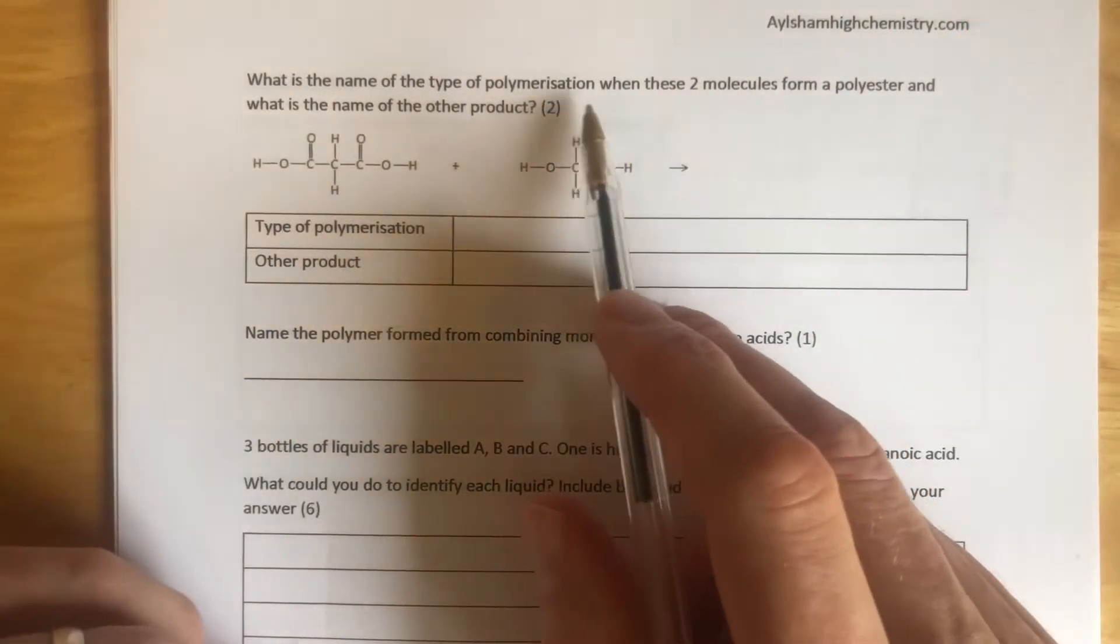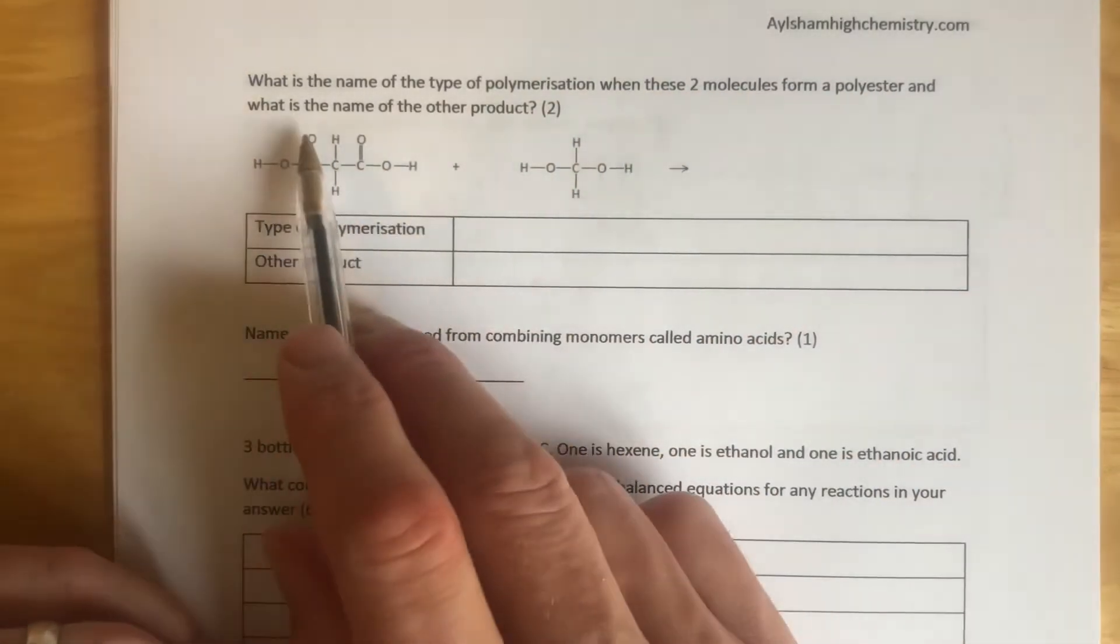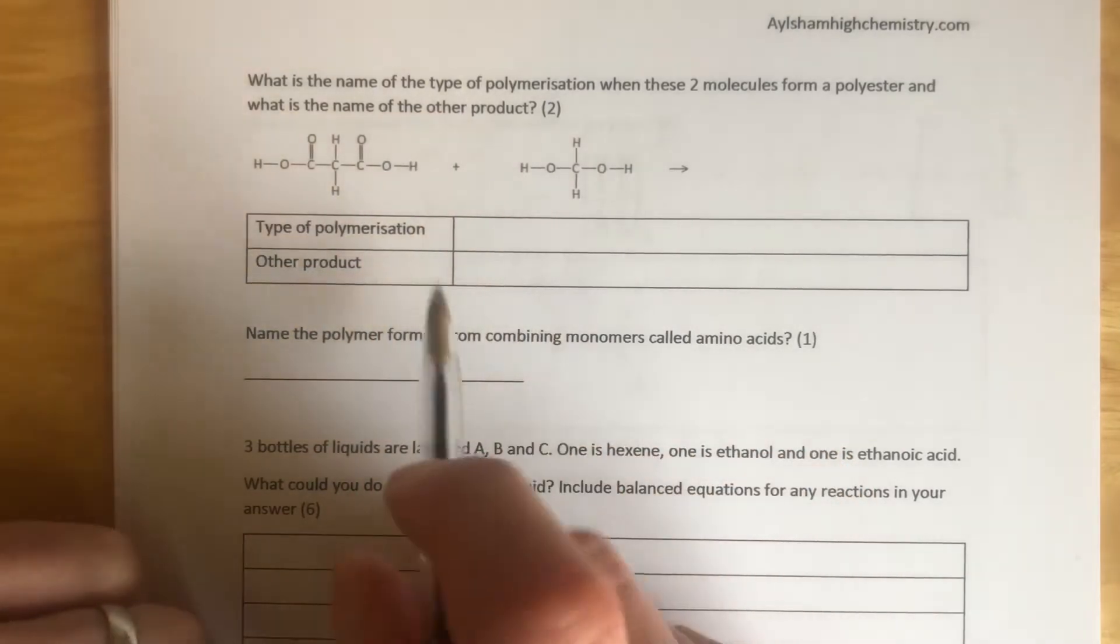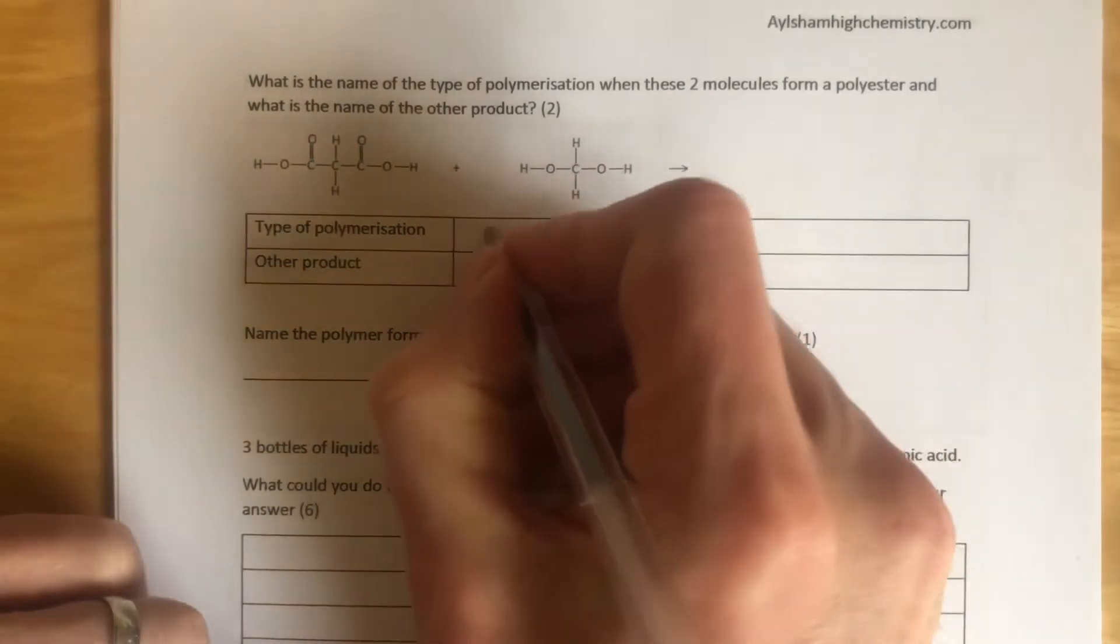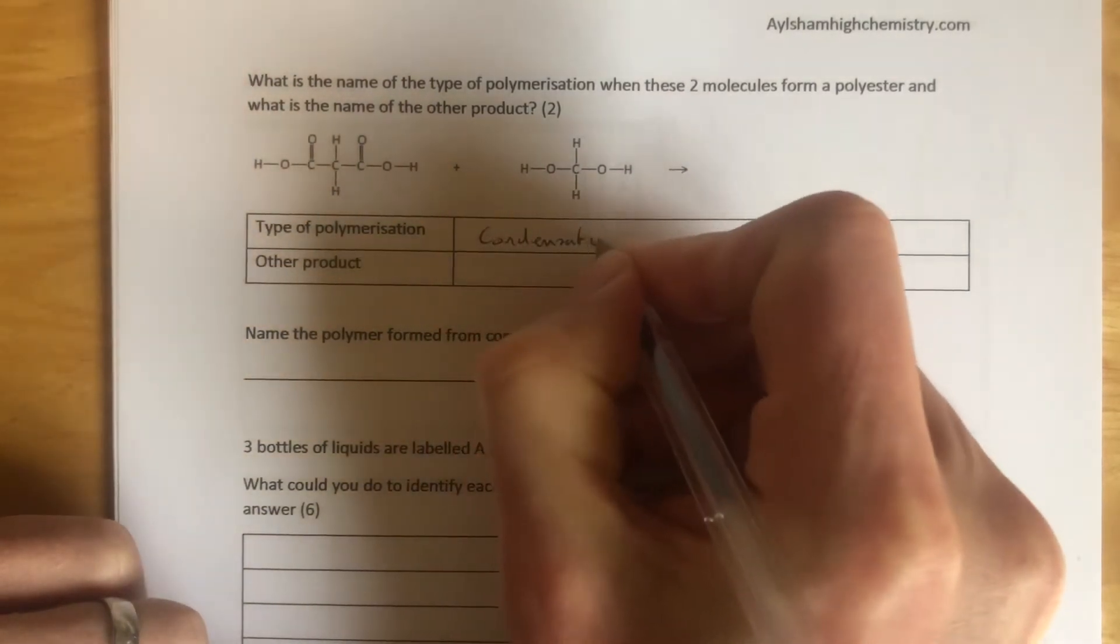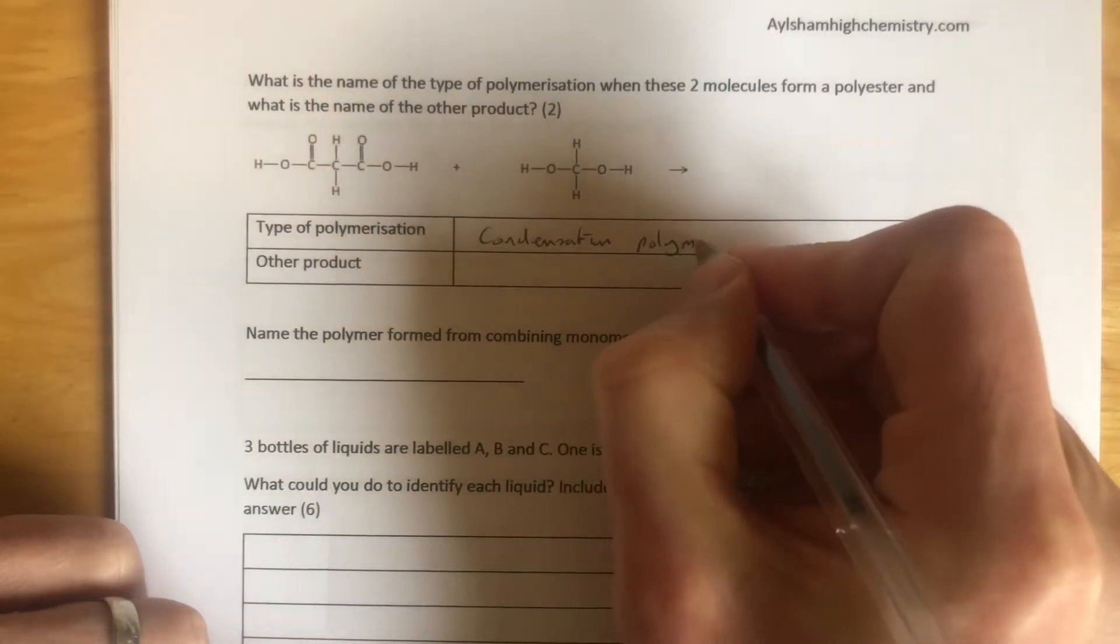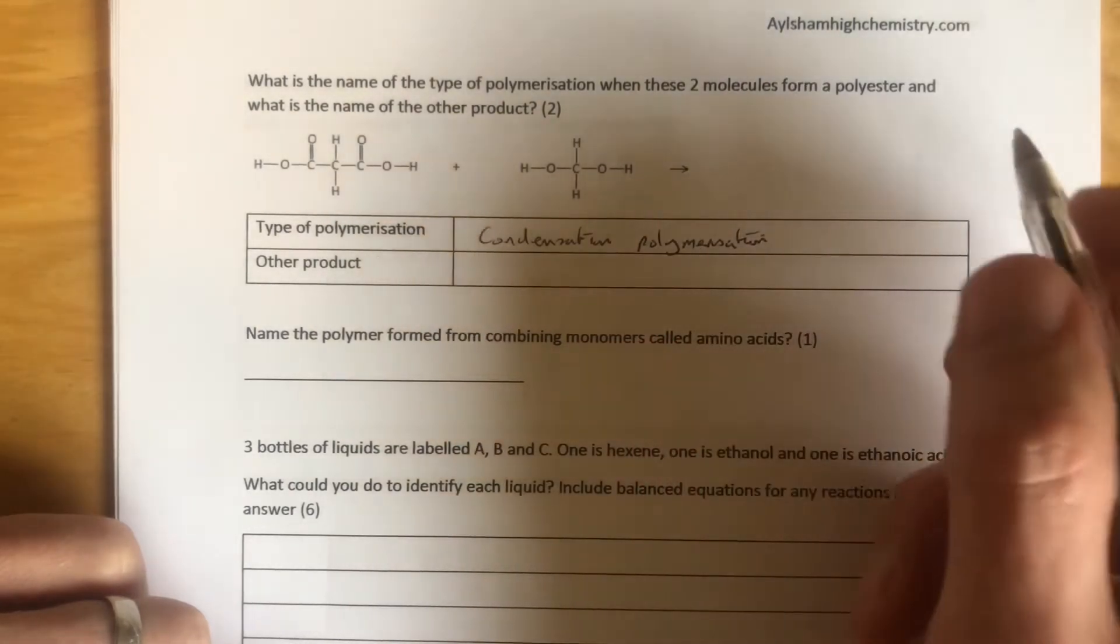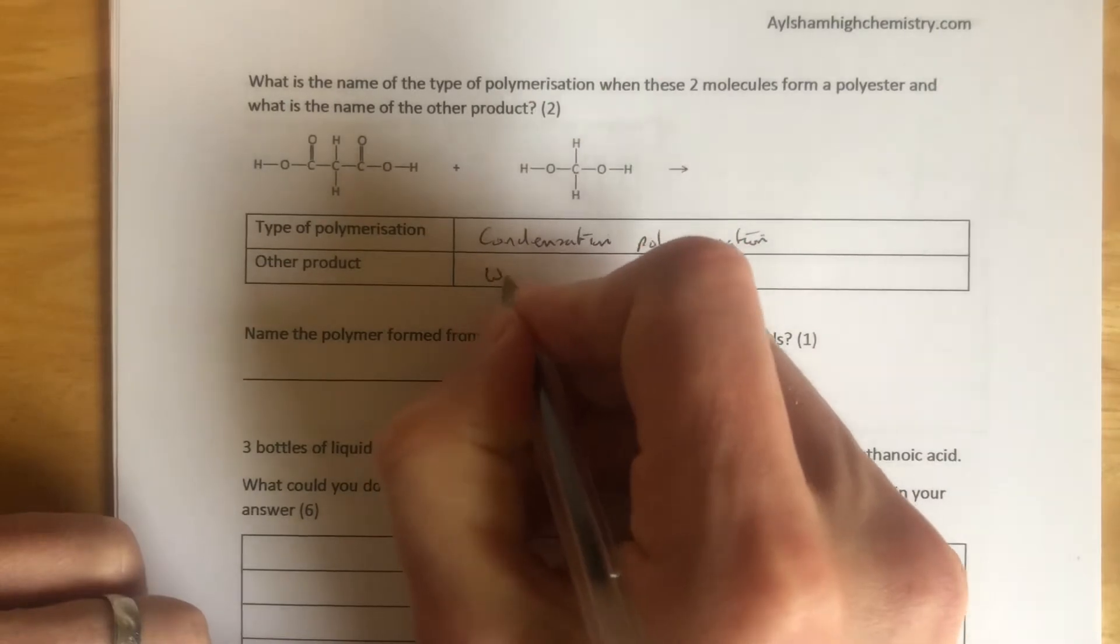What's the name of the type of polymerization when these two molecules form a polyester, and what is the name of the other product? Okay, so this type of reaction is called condensation polymerization. As well as the polyester, the other product formed is going to be water.